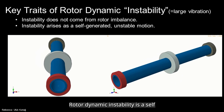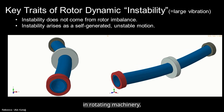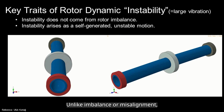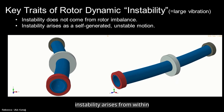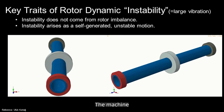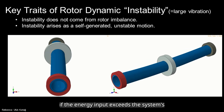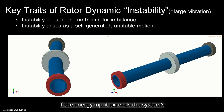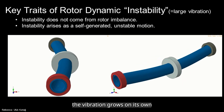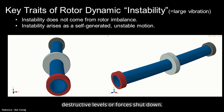Rotor dynamic instability is a self-excited vibration phenomenon in rotating machinery. Unlike imbalance or misalignment, instability arises from within the rotor-bearing-seal system itself. The machine supplies energy into certain vibration modes, and if this energy input exceeds the system's natural damping, the vibration grows on its own until it reaches destructive levels or forces shutdown.